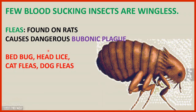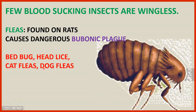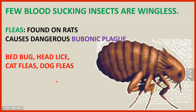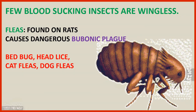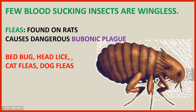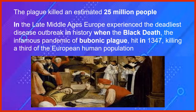Other examples of blood-sucking insects are bed bugs, head lice, cat fleas, and dog fleas. You find cat and dog fleas on your pet dog and cat. If you don't keep your bed clean you get bed bugs, and if you don't keep your head neat you get head lice. This dangerous rat flea causes bubonic plague, a disease that infected and killed many people.